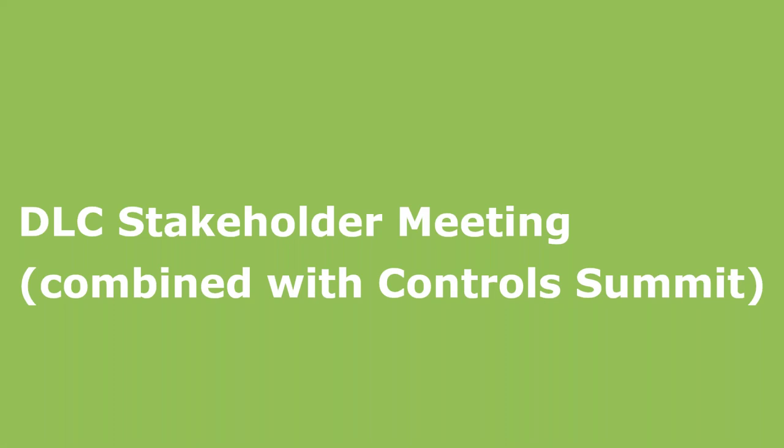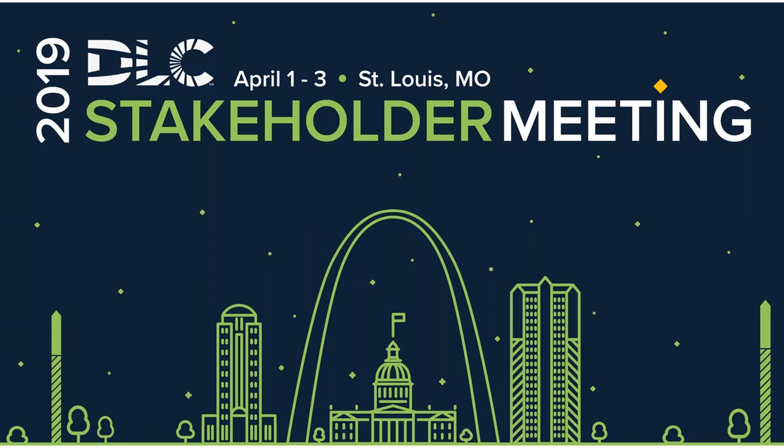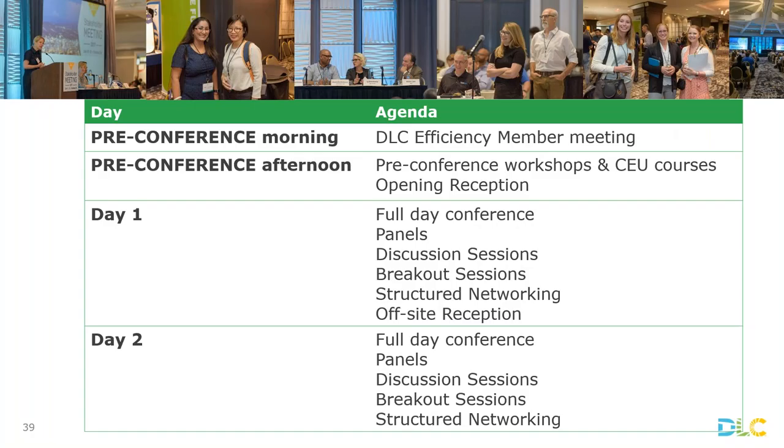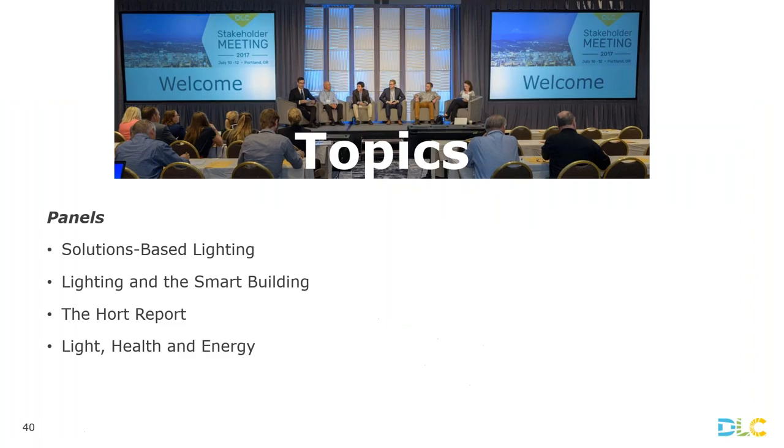The DLC stakeholder meeting this year has been combined with the control summit. For the past few years DLC held an annual control summit where stakeholders could help plan the next steps in DLC's support for network lighting controls. This year the lighting side and the control side of DLC are moving closer together, and we're combining both topics into a single event as the stakeholder meeting. This will be held on April 1st through the 3rd in St. Louis, Missouri. The agenda will look very similar to past stakeholder meetings, but there will be tracks for lighting and for controls in the workshops, discussion sessions, and breakout sessions.